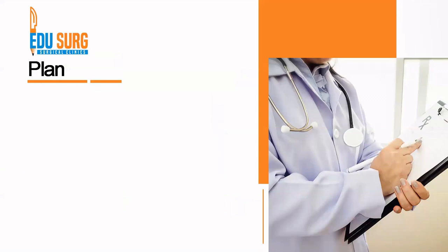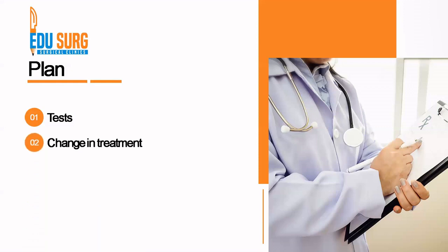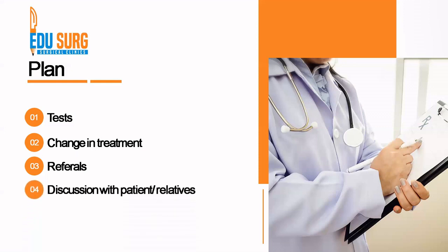Once you have completed your subjective, objective, and overall assessment, you decide the plan for the next 24 or 12 hours depending on where the patient is based and what the care plan is. If the patient is in the ICU, you may need four-hourly rounds or hourly checks. You have to decide what tests are required, if there is any change in treatment such as antibiotics, ventilator settings, or medication, and whether the patient needs any new referral. A very important part of the plan is to update the patient and relatives on what happened and what is planned next, to avoid any lapse in communication.